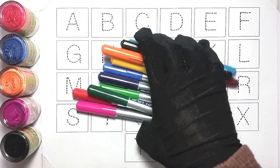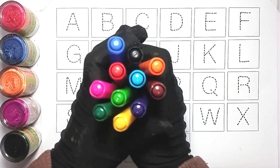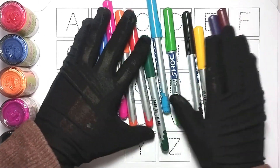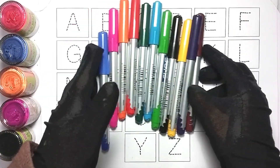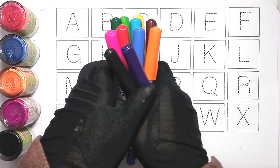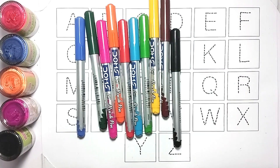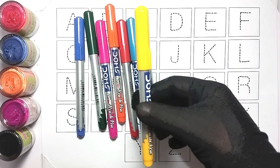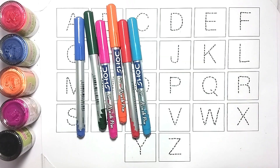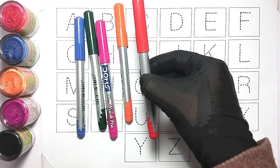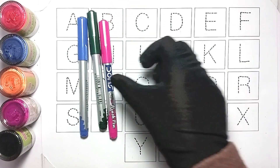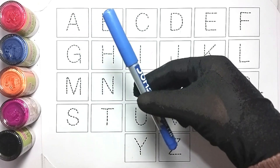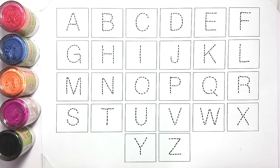Hello kids, welcome to my another video. Today we will learn A to Z. These are our colors: red color, orange color, pink color, green color, and blue color. So kids, let's start the video.